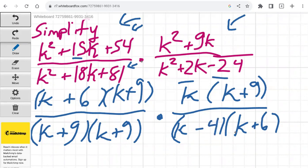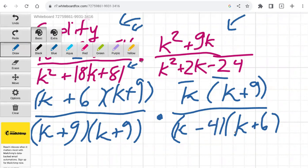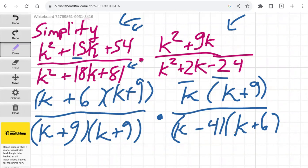From here, it's simplifying by crossing out terms when appropriate. We have k plus 9 here, and we have a k plus 9 here. So those k plus 9 divided by k plus 9 equals 1, so we can divide out those terms. We also have a k plus 9 in the denominator here and a k plus 9 in the numerator here, so we can divide out those.